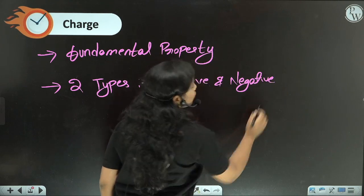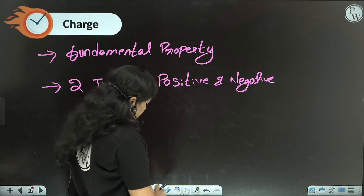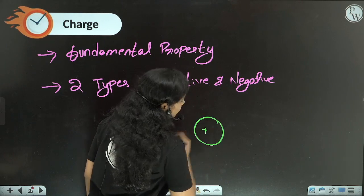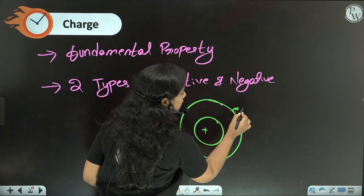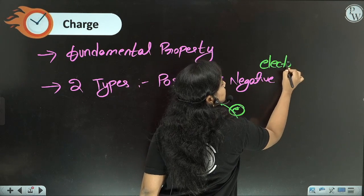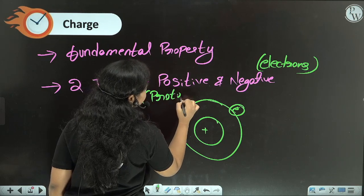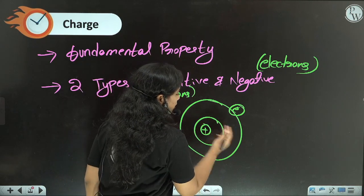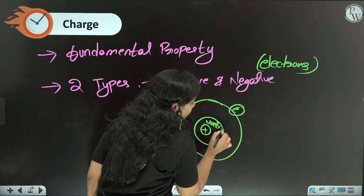Now, where do these positive and negative charges exist? If you take an atom — this is the nucleus — the negative charges around the nucleus are called electrons, and the positive charges are called protons. So protons are inside the nucleus, and along with protons, neutrons are also inside the nucleus.